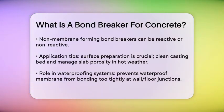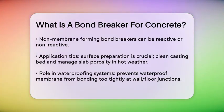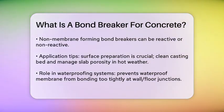Bond breakers also play a crucial role in waterproofing systems. For example, at wall-floor junctions, bond breakers prevent the waterproof membrane from bonding too tightly, which can cause stress and lead to failures. The type of bond breaker used depends on the elongation properties of the waterproof membrane, with different classes requiring different widths of bond breaker tapes.